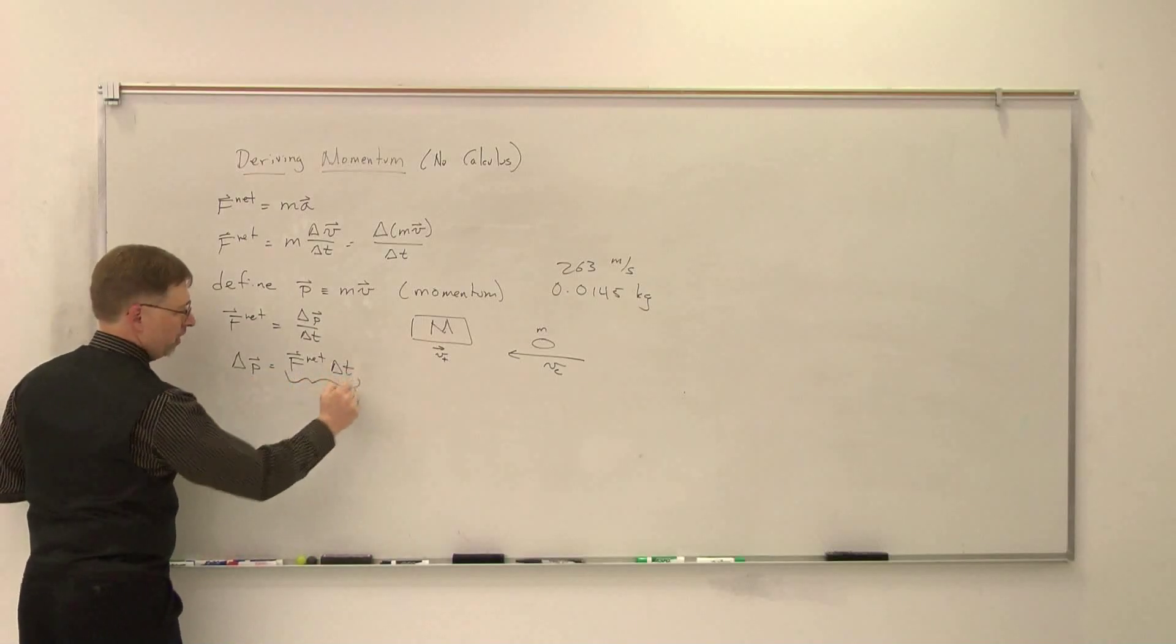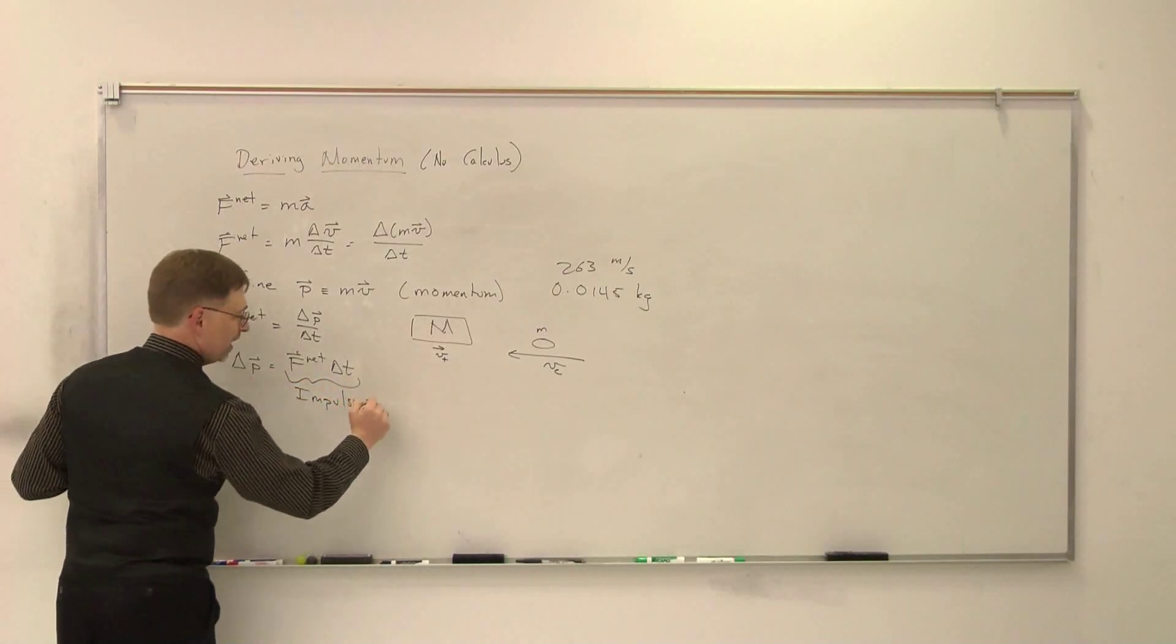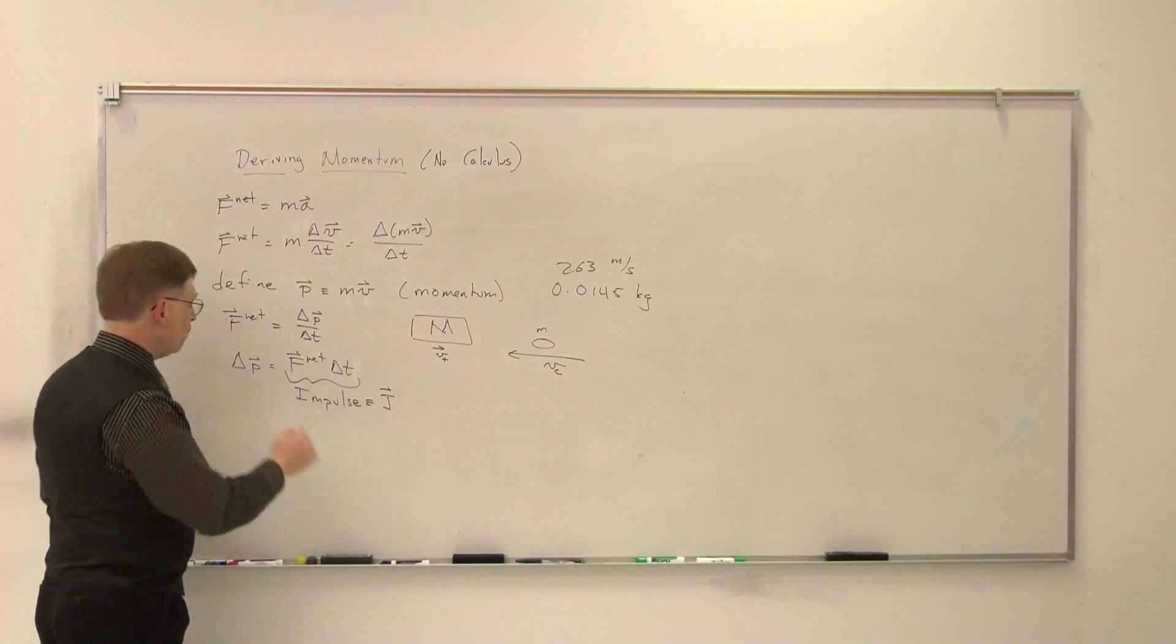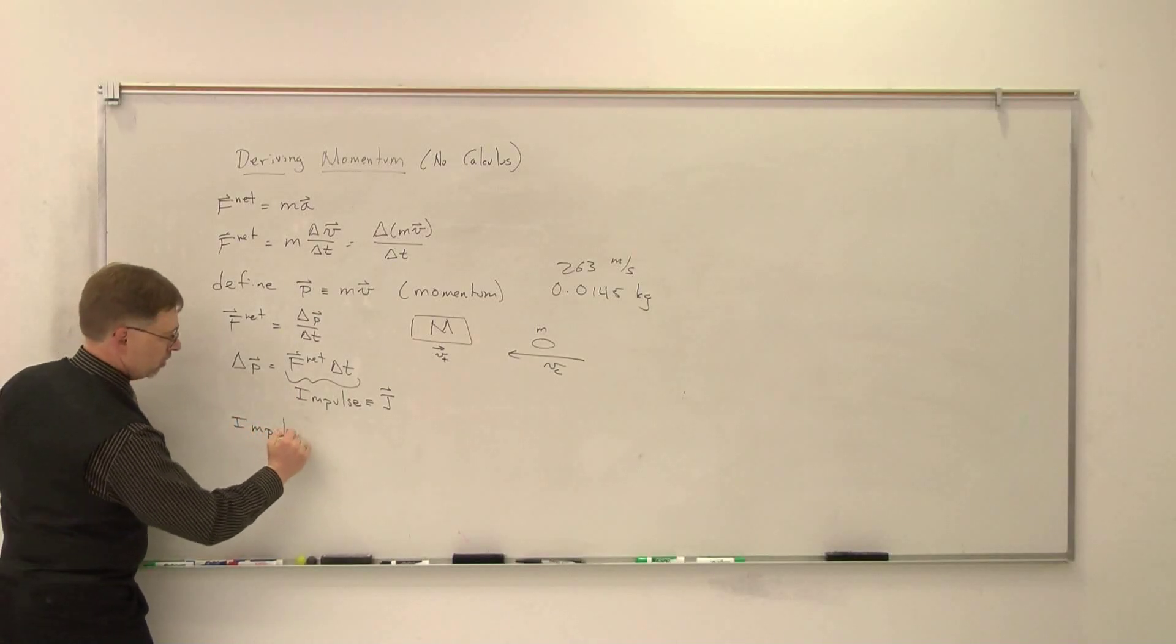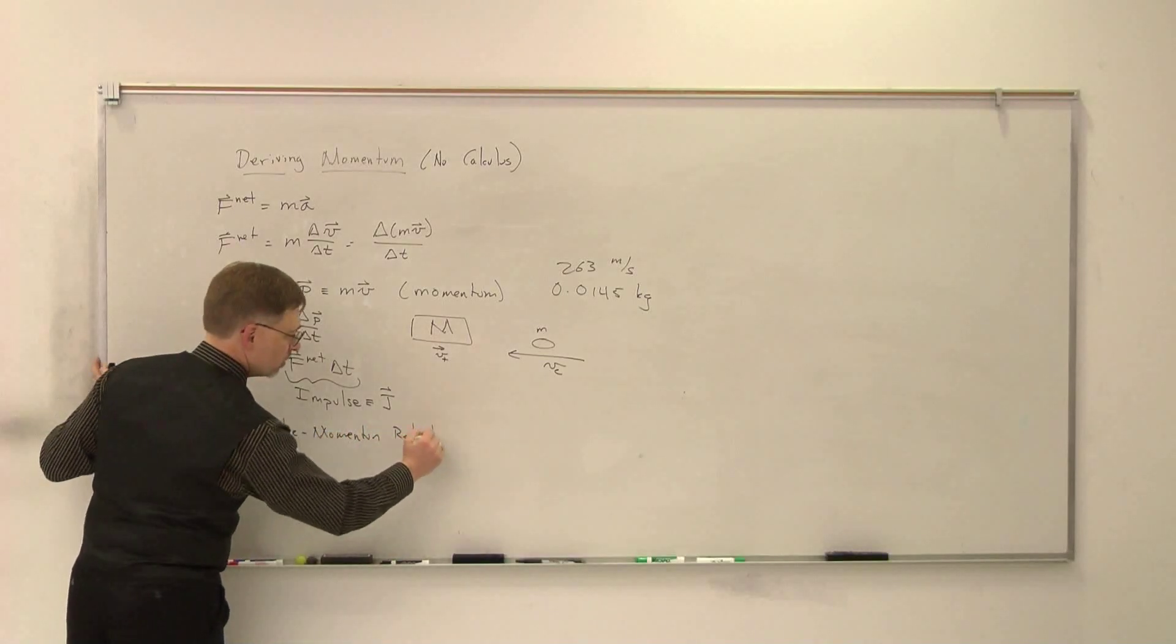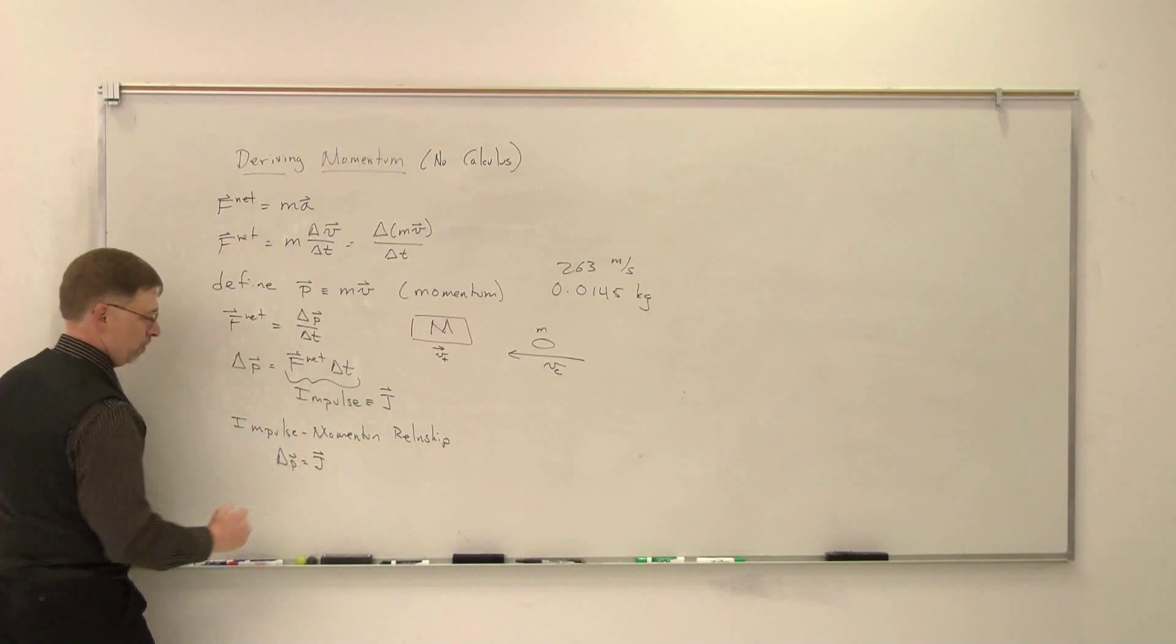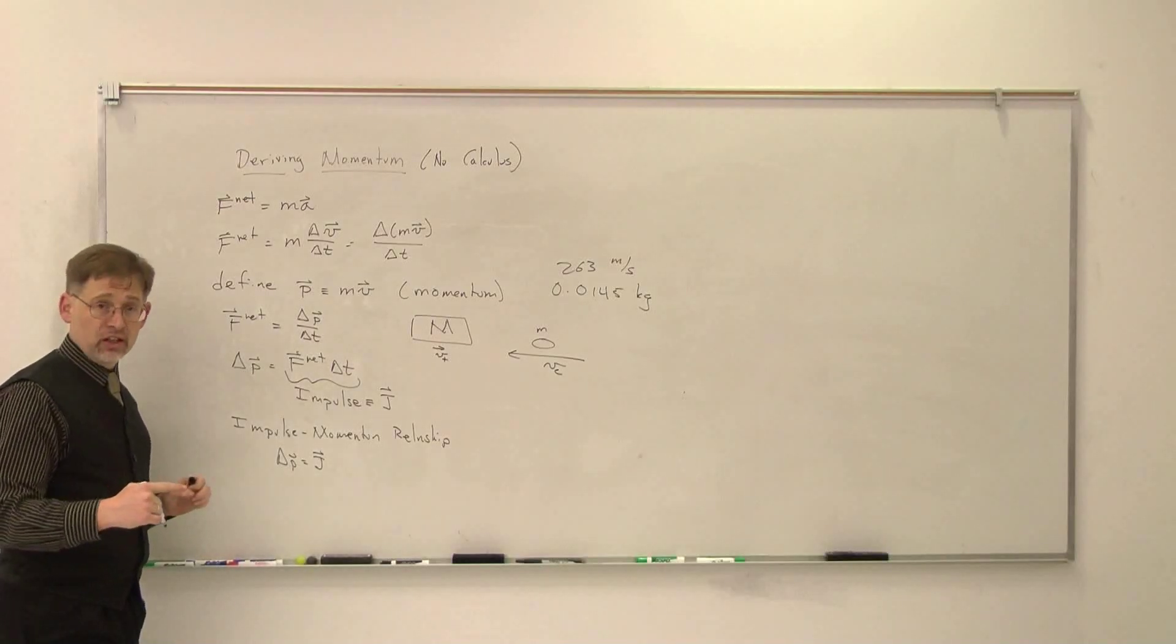This quantity here is usually called the impulse and given, most of the time, the symbol J. In doing that, we can then write what's called the impulse momentum relationship. And it says that the change in momentum is equal to the impulse. And this is actually how Newton wrote his second law of motion.